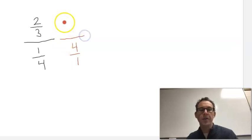and what we did to the bottom, we have to do to the top, four over one. And when we solve for that, we get four over four, which is just one.